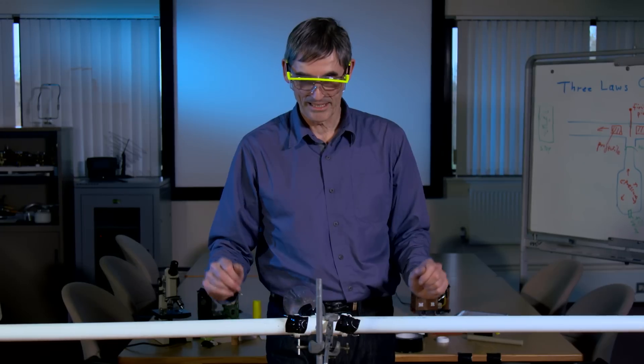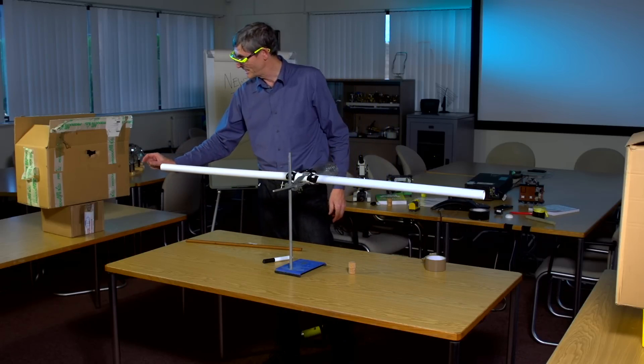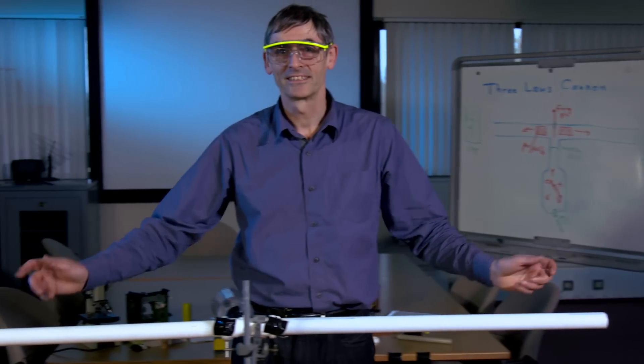And of course we had the first law: when the projectiles came out the end of the cannon, they flew in a straight line to the stop boxes on either side.